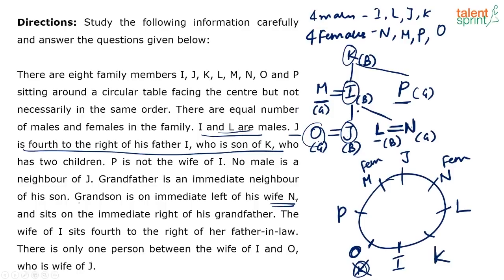Coming to the arrangement: I placed J and I first, then K as grandfather next to I, then L and N. M is placed 4 to the right of K. Then O is placed with only one person — P — between M and O. That completes the arrangement. Hope it was clear.